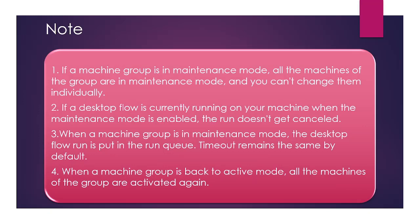If a machine group is in maintenance mode, all the machines of the group are in maintenance mode and you cannot change them individually. So if you have a machine group with two machines and the group is in maintenance mode, all machines are in maintenance mode and you cannot change anything on those machines. Further, if a desktop flow is currently running when maintenance mode is enabled, the run does not get cancelled — your flow run will not be affected.